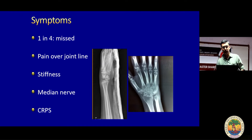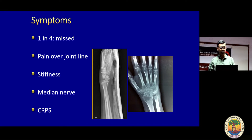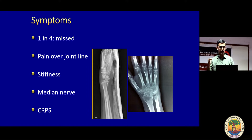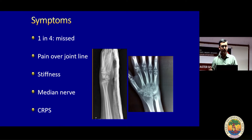Almost one in four perilunates have been missed — I think I've missed one or two myself. They present primarily with pain over the wrist joint. If they don't move the wrist, they don't usually have pain. So the moment you ask them to move the wrist, they'll get pain. Imagine a patient who comes to you with just mild pain but a lot of stiffness, and pain only on movement.